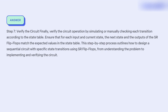Step 7: Verify the circuit. Verify the circuit operation by simulating or manually checking each transition according to the state table. Ensure that for each input and current state, the next state and the outputs of the SR flip-flops match the expected values in the state table. This step-by-step process outlines how to design a sequential circuit with specific state transitions using SR flip-flops, from understanding the problem to implementing and verifying the circuit.